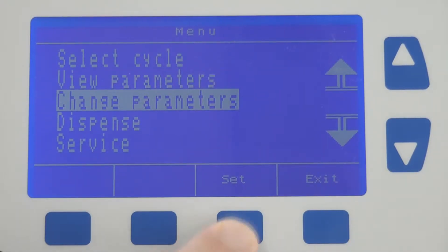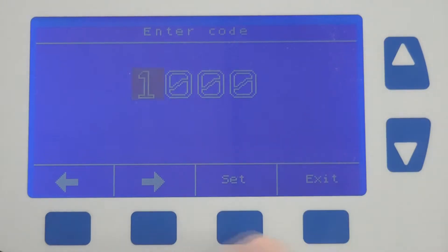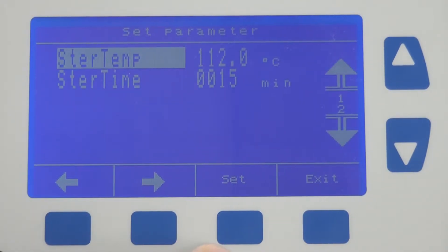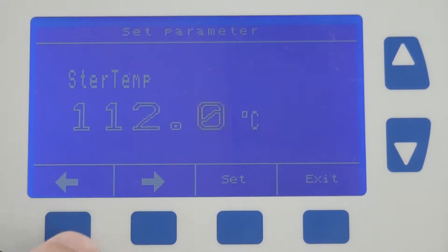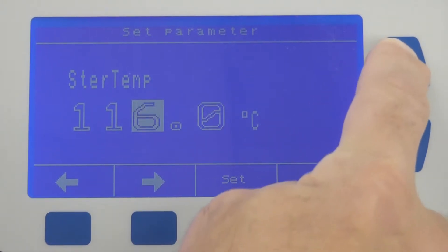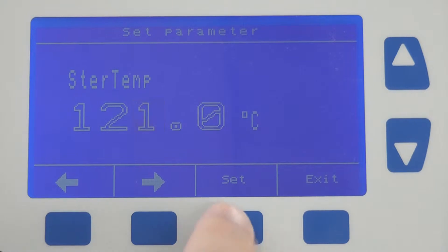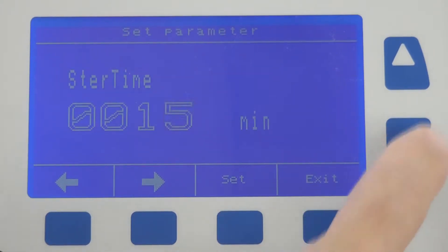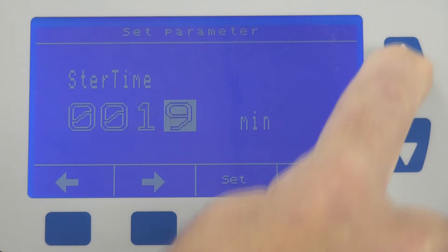Programming the media prep system is very straightforward. After entering an access code, simply select the parameter you wish to change. In this case, we are going to change sterilization temperature from 112 degrees Celsius to 121 degrees Celsius, and sterilization time from 15 minutes to 20 minutes.